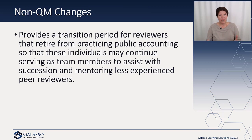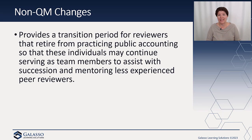Outside of the quality management changes, there are other omnibus changes. As you've probably heard, we have a bit of a pipeline issue — not enough people to do all the work that needs to be done — and this is acutely felt in the peer review world. At one point, the estimate was that the average age of a peer reviewer was somewhere in their 60s, so obviously retirements create problems.